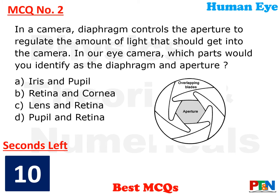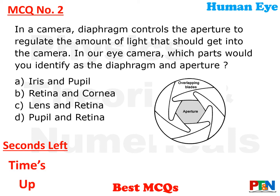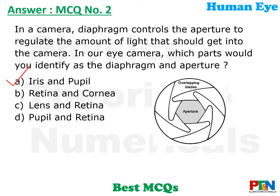Next MCQ. In a camera, the diaphragm controls the aperture to regulate the amount of light that gets into the camera. A picture has been given. In our eye system, which part would you identify as the diaphragm and aperture? 4 options, 10 seconds time. The answer is option A — iris and pupil. The iris acts as the diaphragm and the pupil as the aperture.